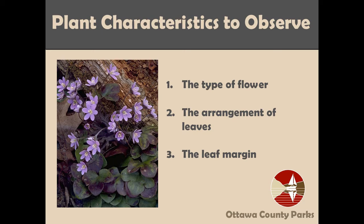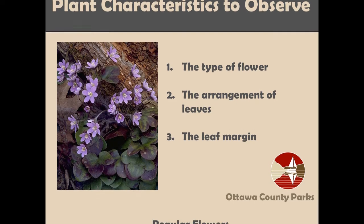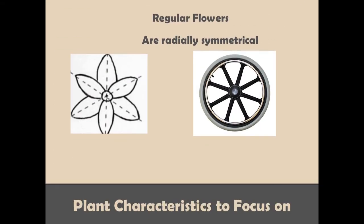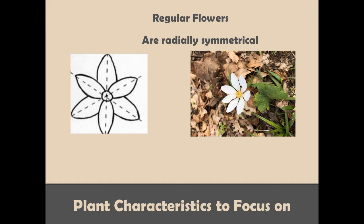Flowers can be split into two groups: regular and irregular. Regular flowers are radially symmetrical. This means that their petals or sepals, which are petal-like parts, are arranged around the center like the spokes of a wheel. Each petal or petal part is similar in size, shape, and color.